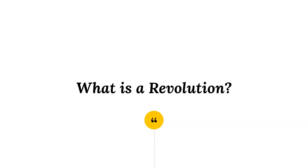Before we go any further, we spent some time talking about the American and French Revolutions and what that meant to the people of those societies. I want to pause and reflect: what exactly is a revolution? What do we know it to be at this point in the curriculum? Take a second to think about how we've defined it before — maybe jot down some quick bullet points on your note sheet, identifying maybe three to five things that make up a revolution.